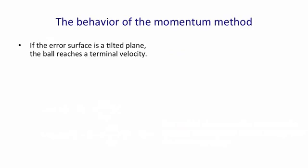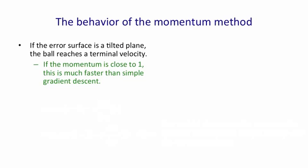The behavior of the momentum method is very intuitive. On an error surface that's just a plane, the ball will reach some terminal velocity, at which the gain in velocity that comes from the gradient is balanced by the multiplicative attenuation of the velocity due to the momentum term, which is really viscosity.